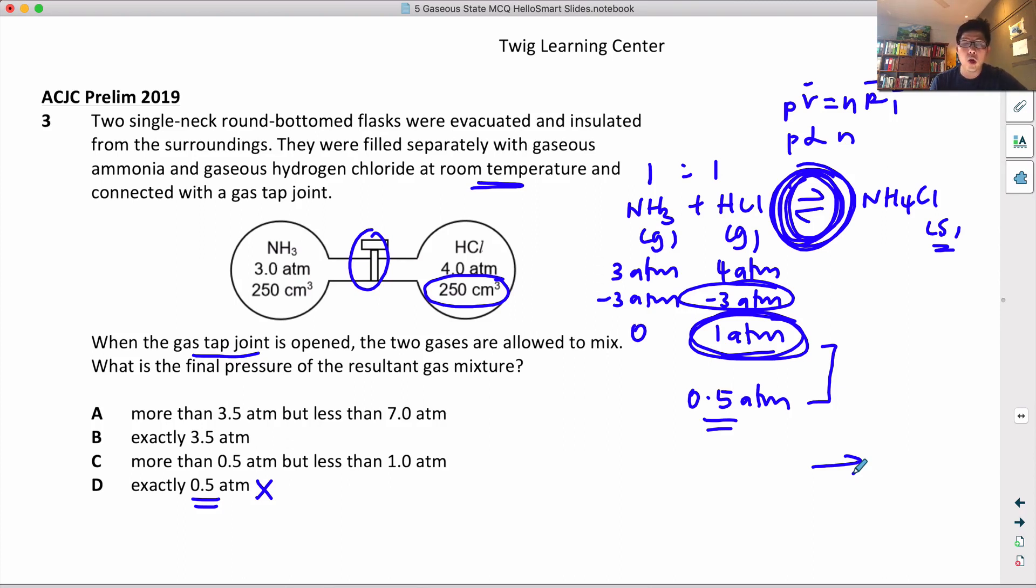It won't be 1 atm, but there'll be slightly more. So it has to be between 0.5 to 1 atm. This is a bit of a tricky question, but the answer should be C.